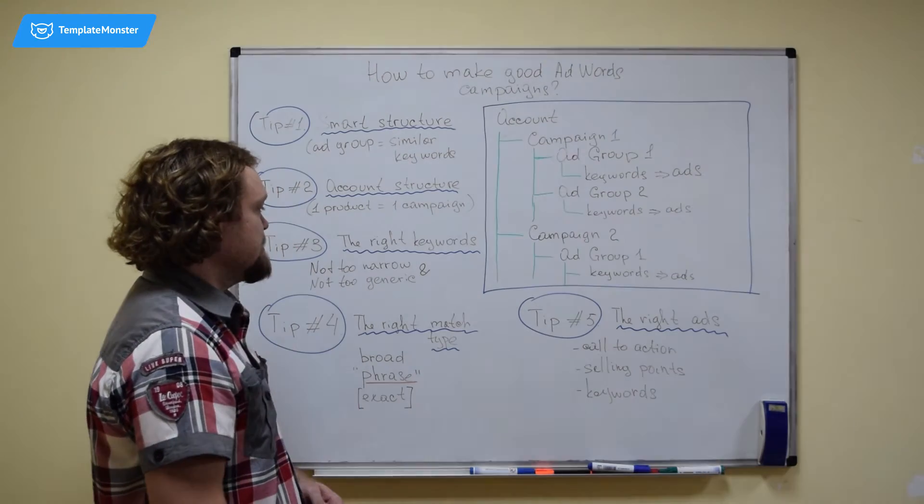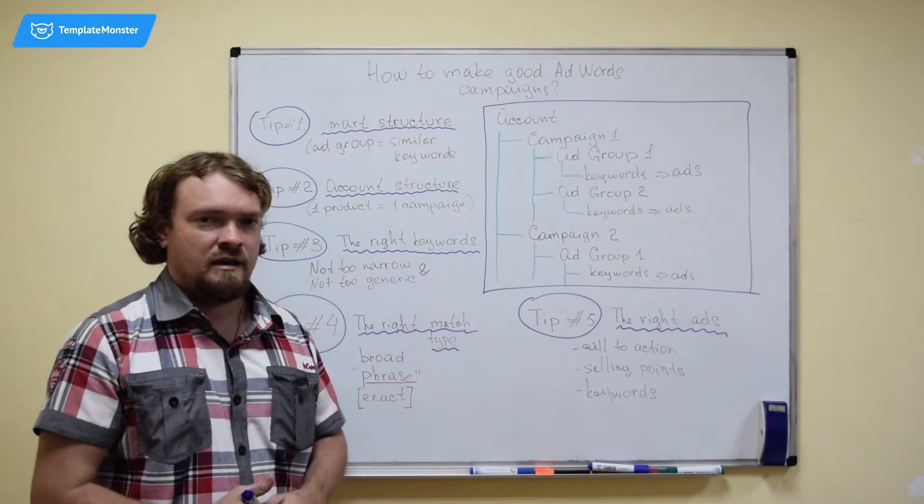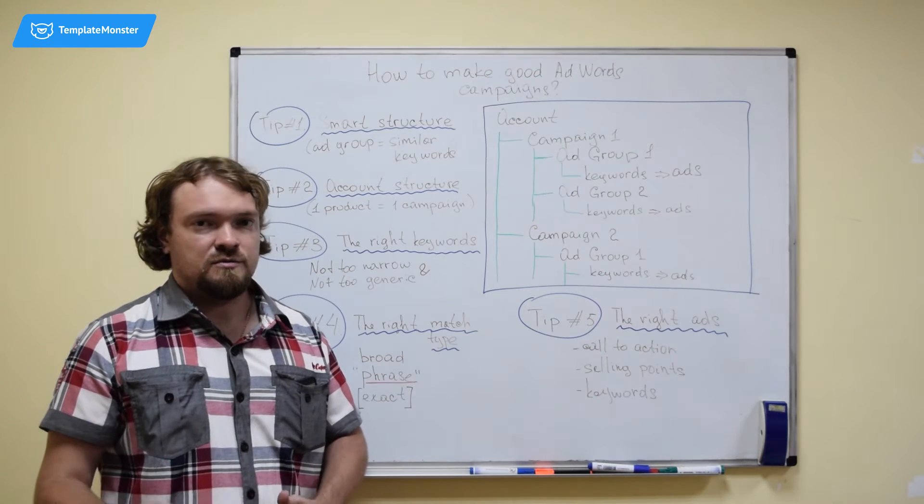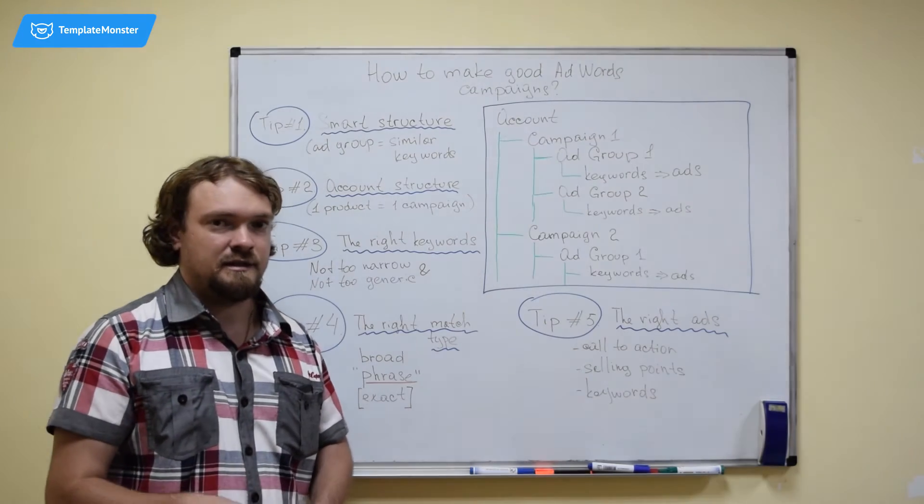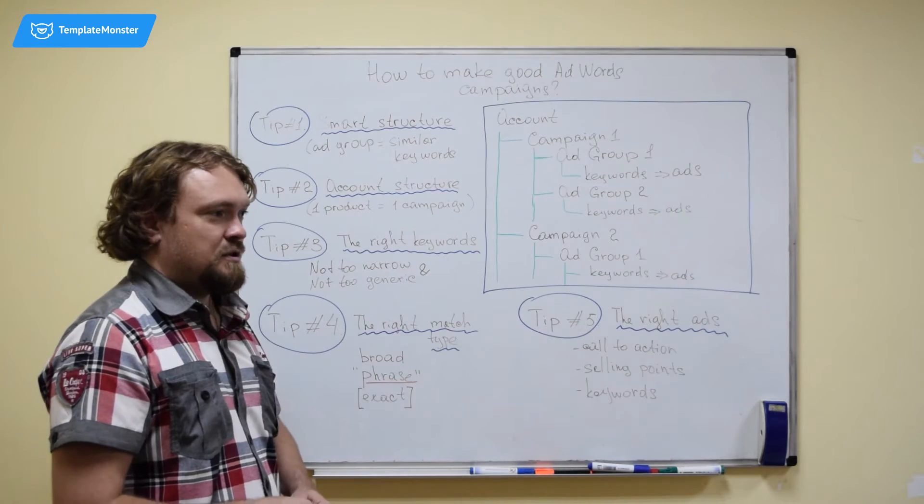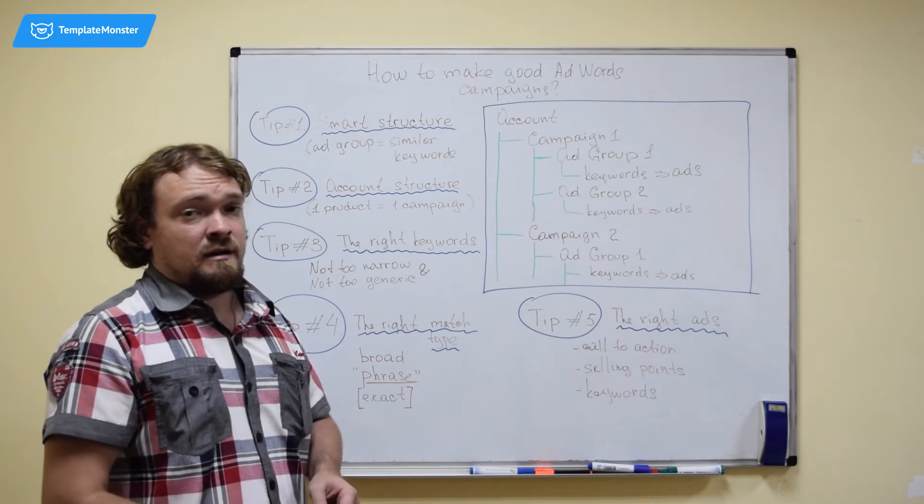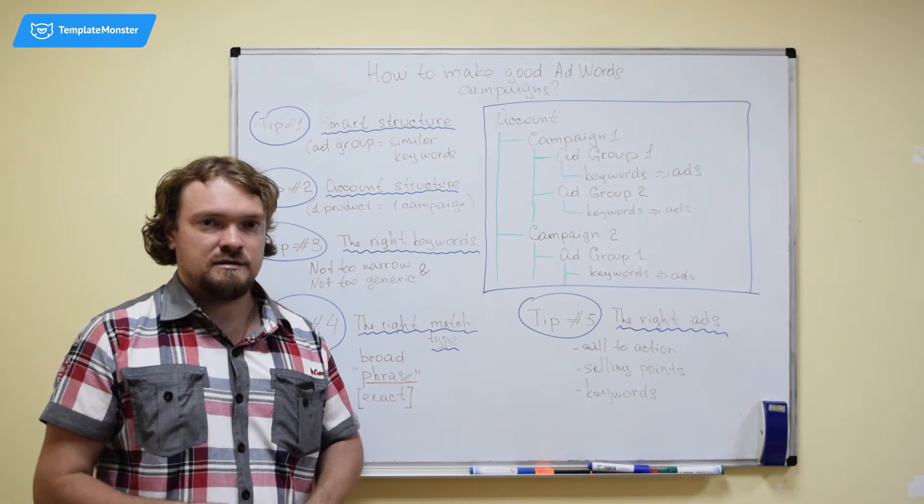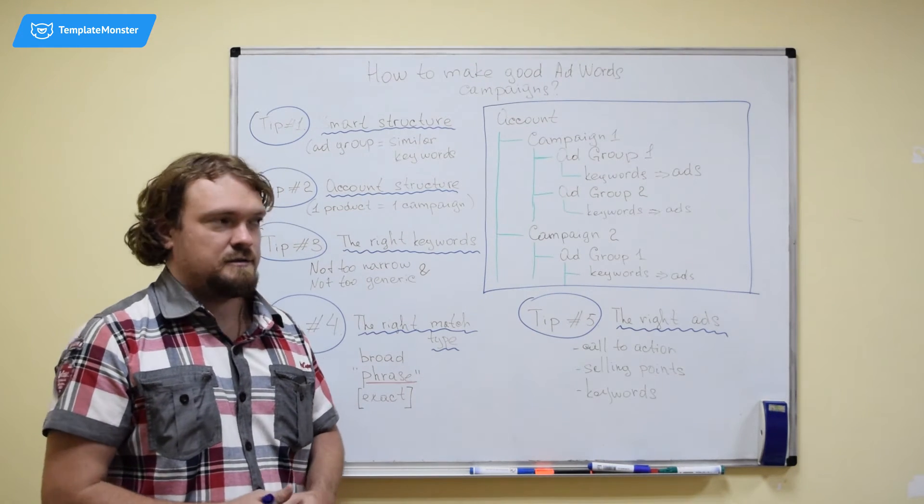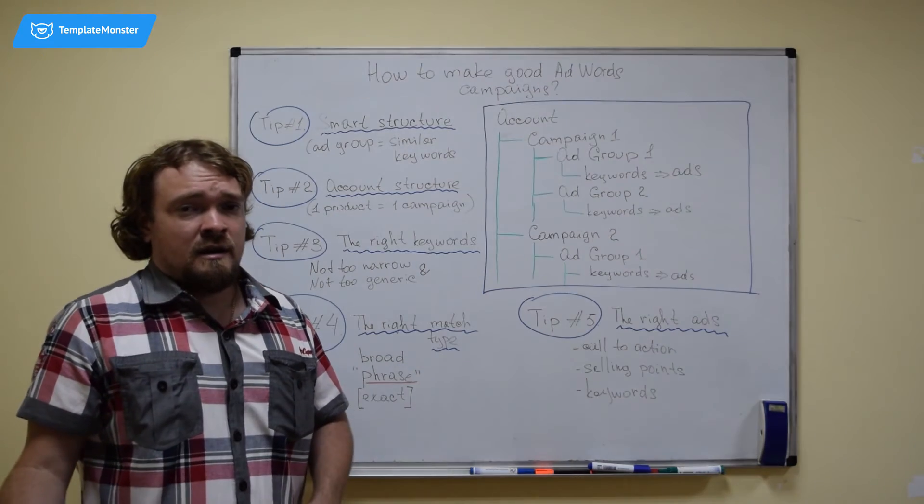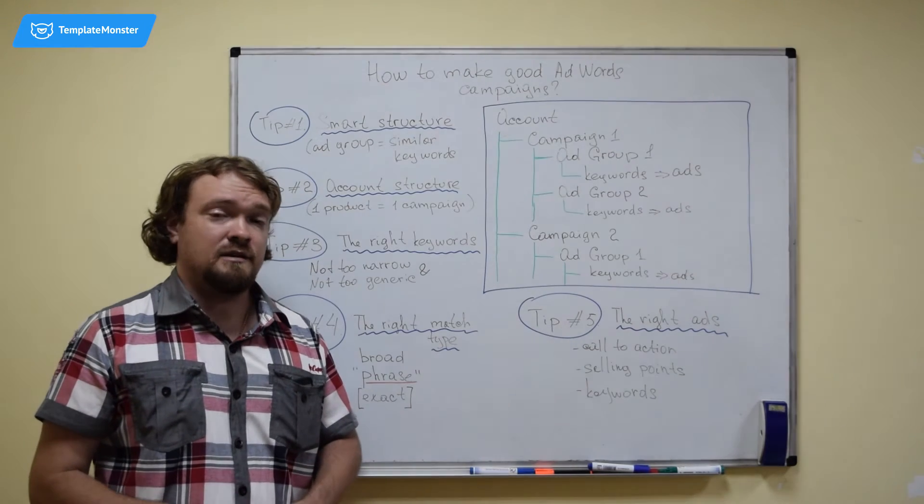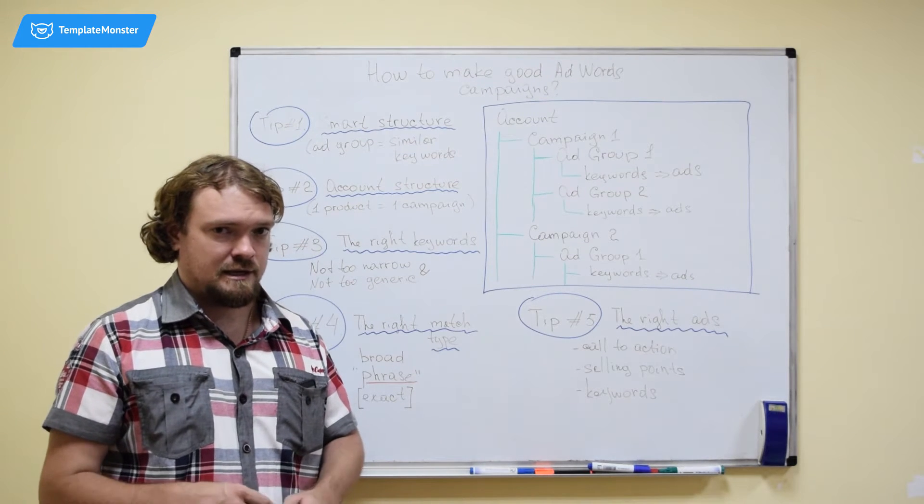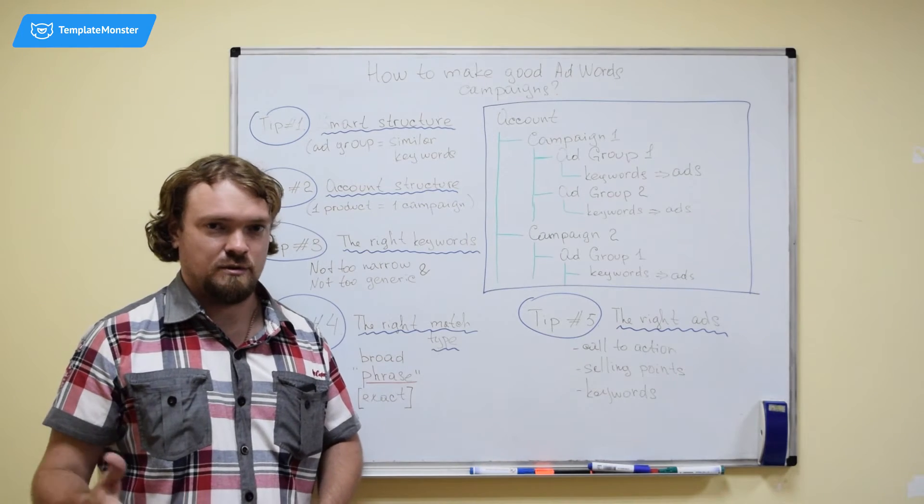The third tip is using the right keywords. The trick here is finding the right balance between keywords that are too narrow and keywords that are too generic. Like being too specific and not being specific at all. Because when you're too specific, you will not get a lot of ad impressions. And therefore you will get a few clicks or no clicks at all, which is not something that you want. If you're going with keywords that are too generic, then you will probably get a lot of clicks. But these clicks will not be relevant. So they will not have value for your business. They will be less likely to convert into a purchase or lead or sign up or whatever it is that you're after.